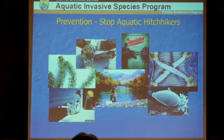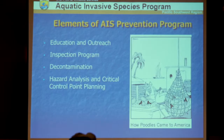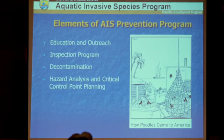Now we'll get into more detail on prevention programs — stopping aquatic hitchhikers. The elements of an AIS prevention program include education and outreach, inspection certification programs, decontamination, and hazard analysis/critical control point planning.